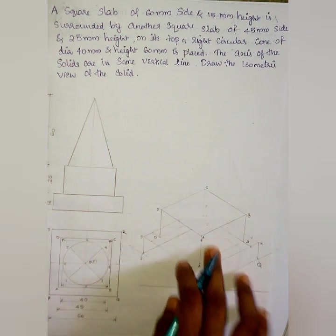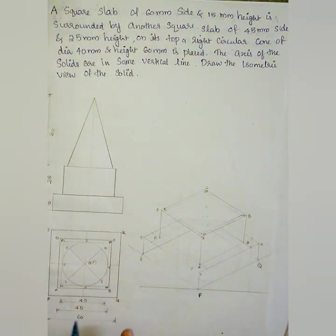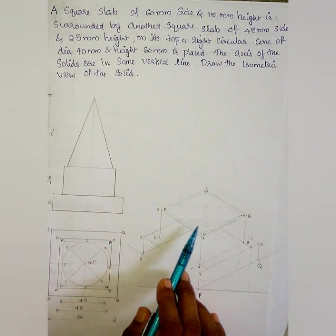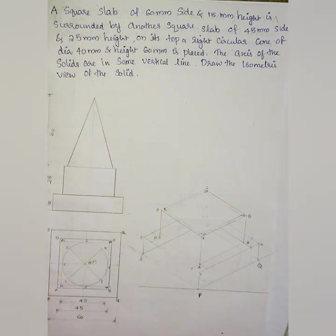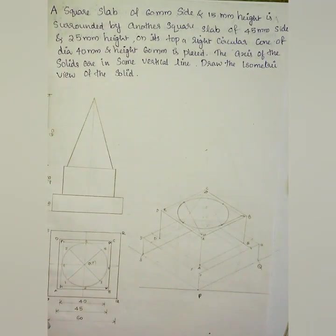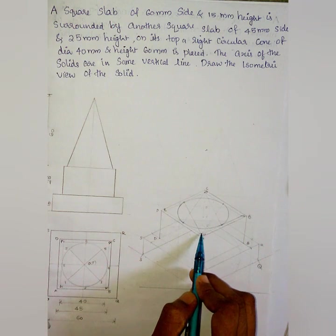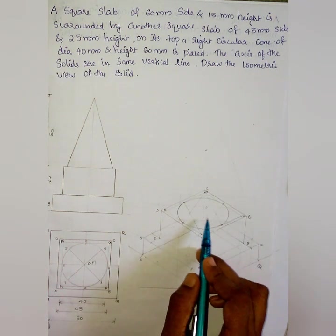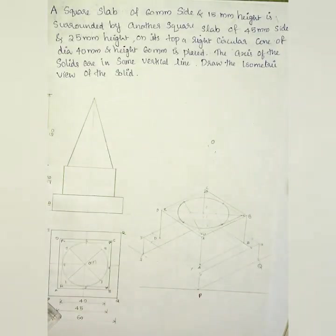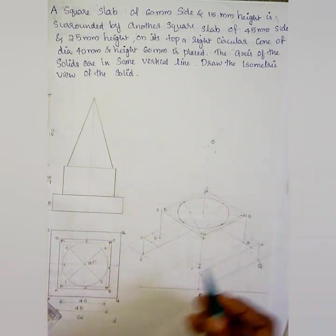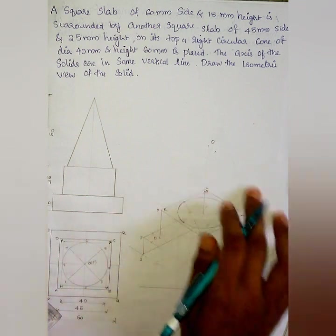We place the cone base along MNOP. We mark points on MN, NO, OP, and MP — points 2, 4, 6, 8 — to construct the isometric ellipse representing the circular base of the cone. Then we mark the center point and the apex point of the cone in the isometric view.